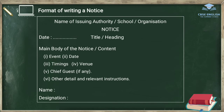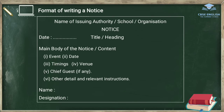Now we will study the actual format of writing a notice. At first, we write the name of the issuing authority or school or organization. Below that, we write NOTICE in block letters or capital letters. Below that, on the left-hand side margin, we write the date, and in the center, the title or heading of the notice. After leaving one line space, we write the main body of the notice. In the main body, we include the event, date, timings, venue, chief guest if any, then other details and relevant instructions. After that, we leave one line space and write the name of the notice writer and their designation. We have to put this notice in a table or box.